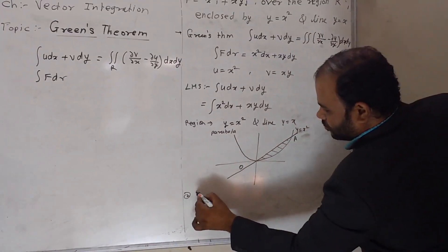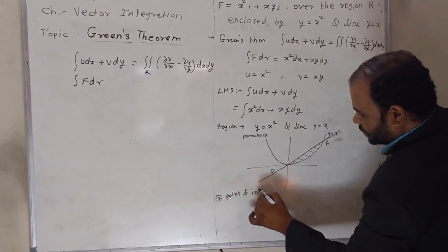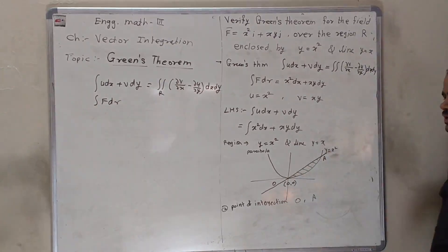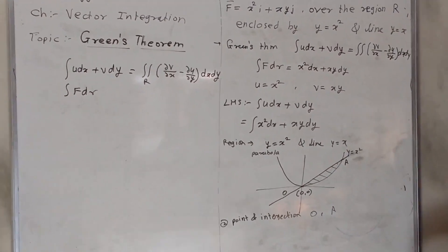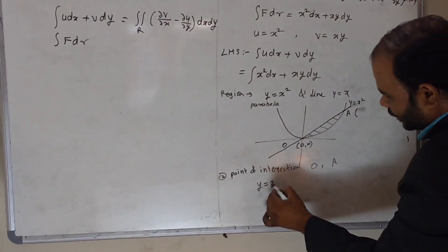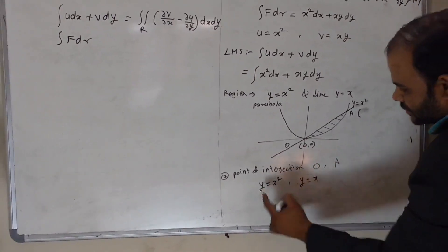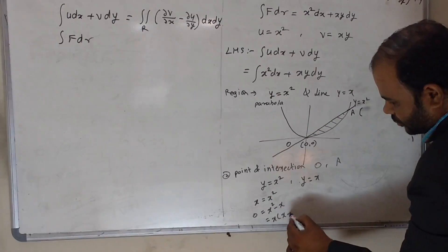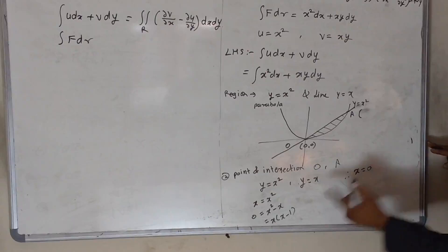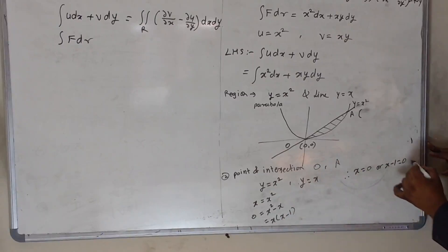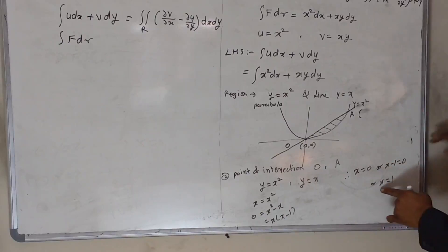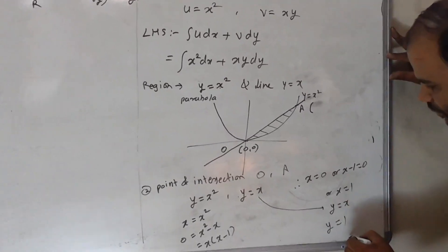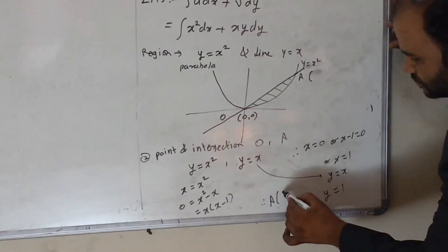The second step is to find the points of intersection O and A. O is (0, 0) because it is the origin. To find the coordinate of A, we use both curves y = x² and y = x. Substituting y = x gives x = x², so x² − x = 0, and taking x common: x(x − 1) = 0. Therefore x = 0 or x = 1. Putting x = 1 in y = x gives y = 1. Hence the coordinate of A is (1, 1).